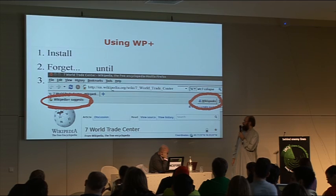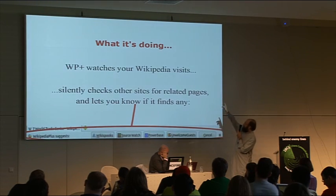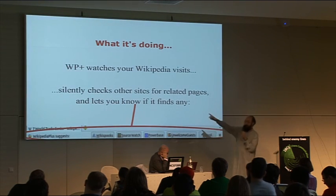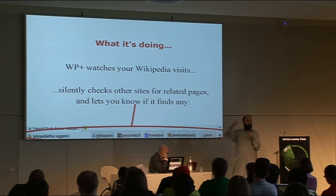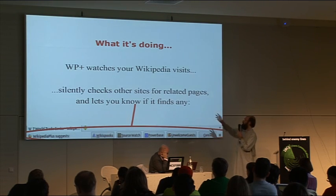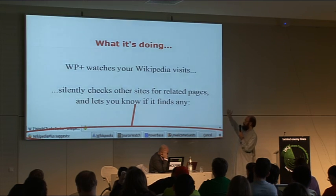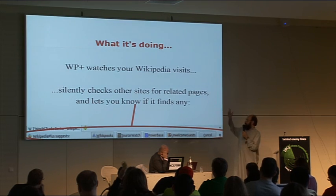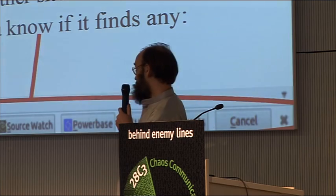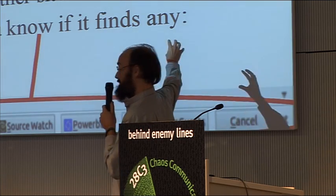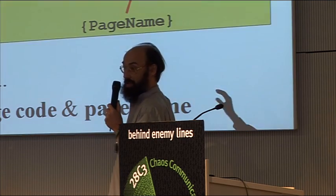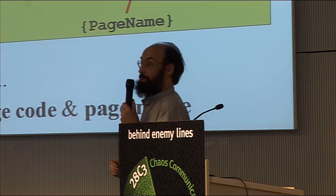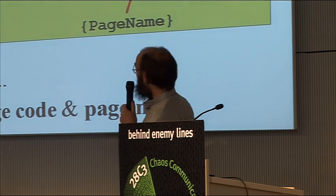How does it work behind the scenes? It quietly, every time you're on Wikipedia, goes away and checks against the sites which you said you were interested to know about — 'Do you know anything about this page?' If it finds one, it pops up a little button so you can go there. It's like adding a little list to the bottom of the Wikipedia page, but it's not on Wikipedia, so they can't take it off Wikipedia.